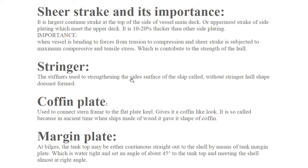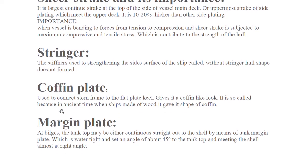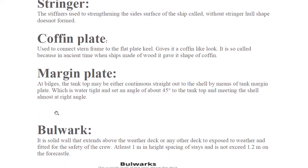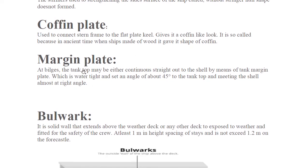Stringers are used to strengthen the side surface of the ship — without stringers the hull form does not form. The coffin plate connects the stern frame to the flat plate keel, giving it a coffin-like look. It is so called because in ancient times when ships were made of wood, it gave the structure the shape of a coffin. The margin plate at bilges is where the tank top meets the shell by a watertight plate set at 45 degrees to the tank top, meeting the shell at nearly a right angle.